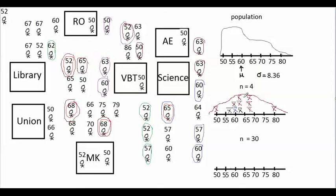It's important to remember that this sampling distribution isn't something a researcher actually creates on paper. The researcher doesn't actually calculate the means of all possible samples — it exists in theory. But it's still an important idea because it's important to think about how some samples underestimate, some overestimate, and some are more accurate, with fewer samples at the extremes and most in the accurate middle area.